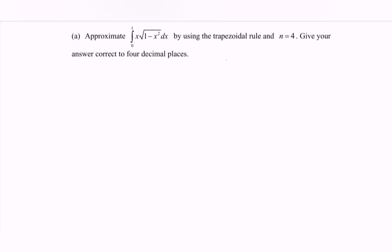Hello everyone. In this video I'm going to discuss the example for the trapezoidal rule. Approximate the integral of x multiplied with the square root of 1 minus x squared with respect to x, for the range 0 until 1, by using the trapezoidal rule where n is equal to 4. Give your answer correct to 4 decimal places.